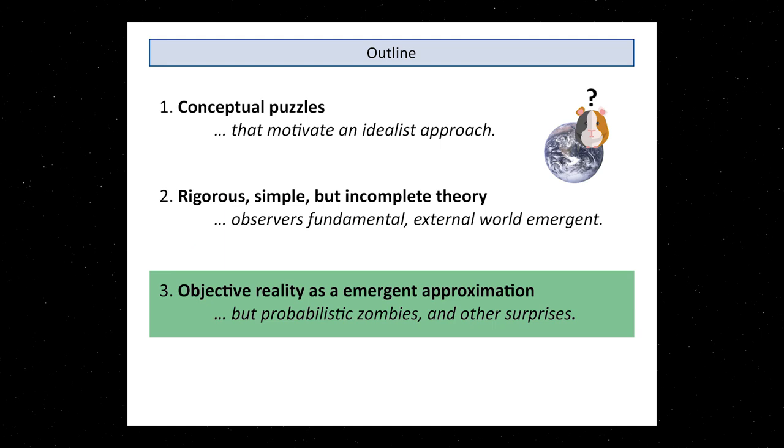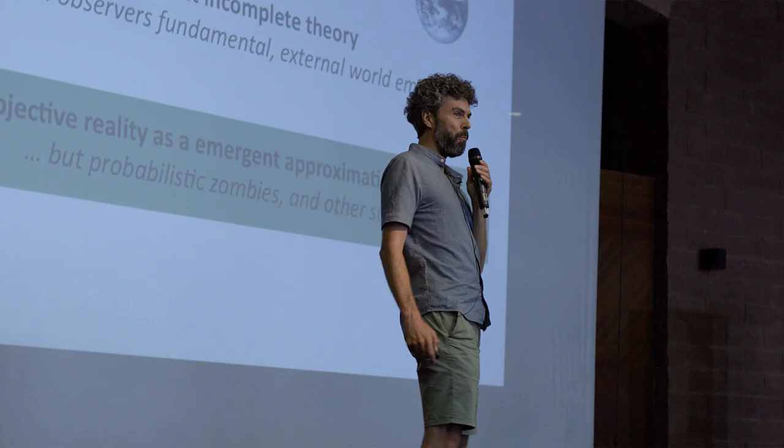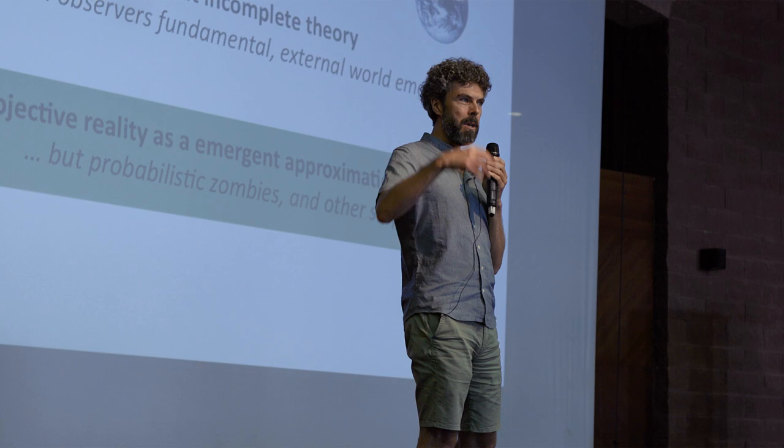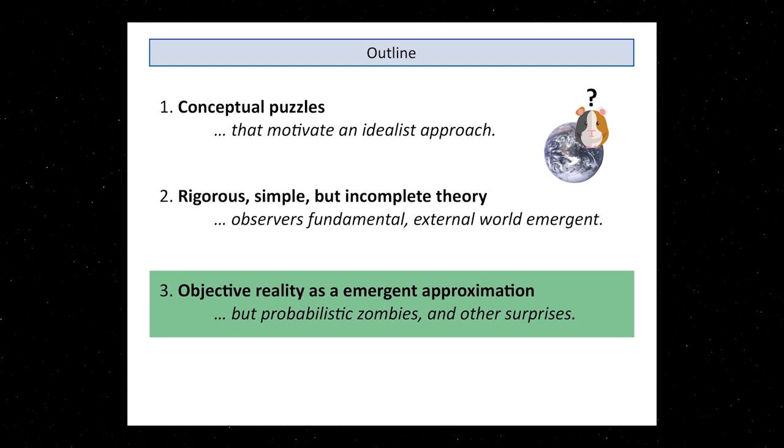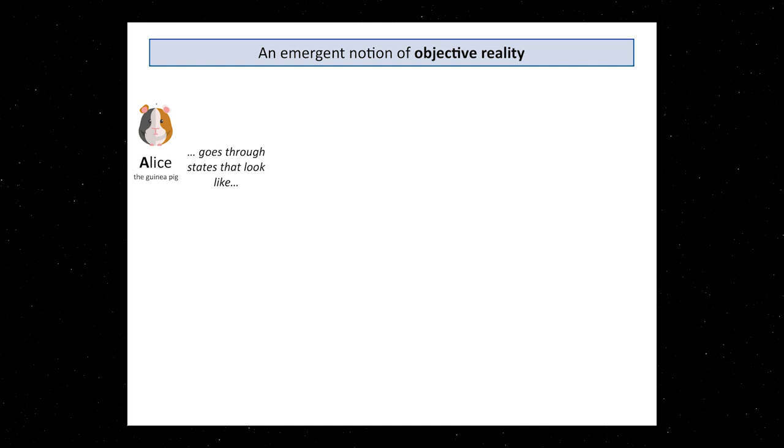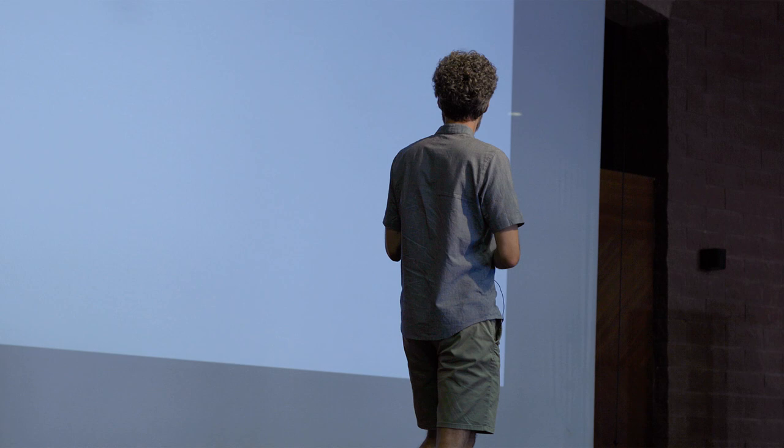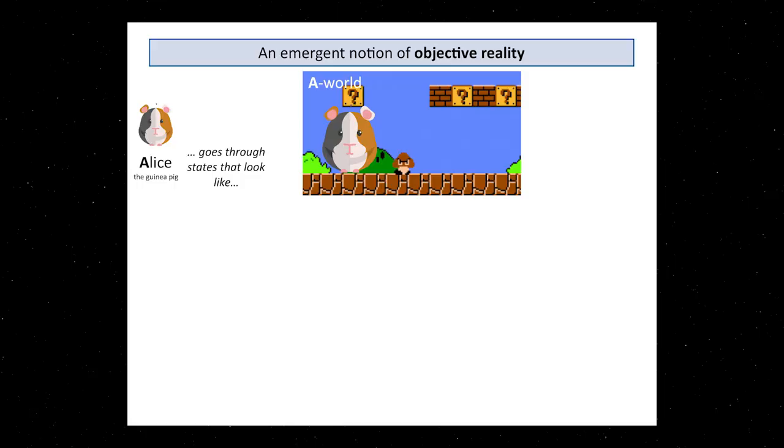In the last part, let me tell you what happens about more than one observer. Right now I've just talked about one observer, one observer seeing some kind of world around it. But here's some question you can ask. I claim that you get some sort of emergent notion of objectivity. Think of this observer now, like Alice, the guinea pig. She's in some state. And as we've seen from the theorem before, things will pretty much look for Alice as if there was some kind of world around her. Perhaps this is a world where you run around and collect points.